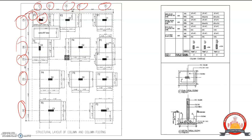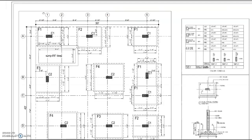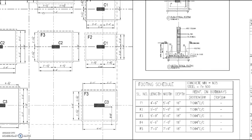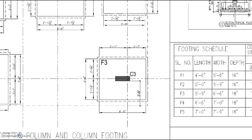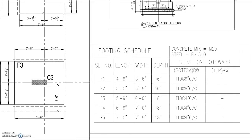Now let me show you one more drawing — this is the detail drawing. All the footing details will be given here: F1, F2, F3, F4, F5 with their length, width, and depth. The depth here is the depth of the concrete, not the depth of the excavation.